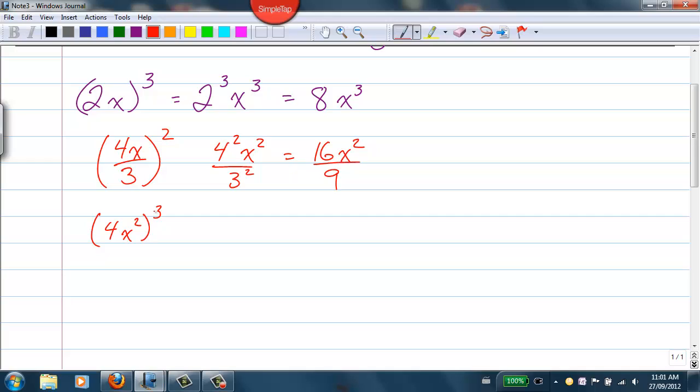Maybe something a bit more involved. 4x squared all to the power of 3. The 3 affects the 4, and it affects the x squared. So we get 4 cubed, and then we get x squared cubed.